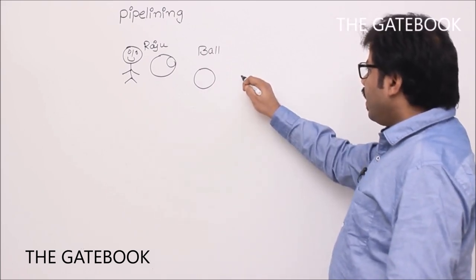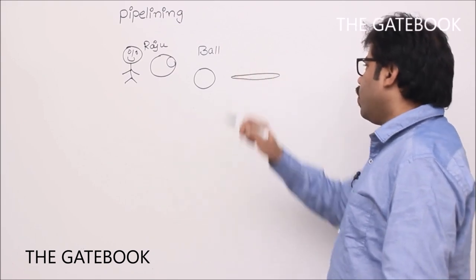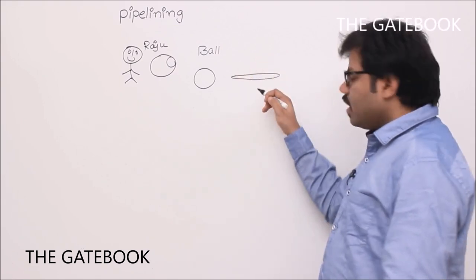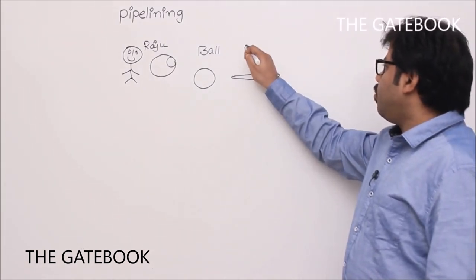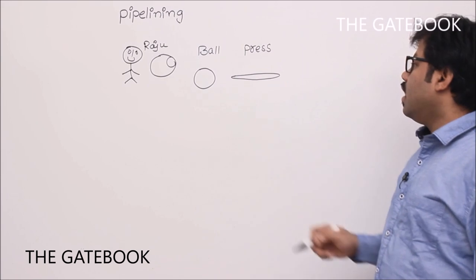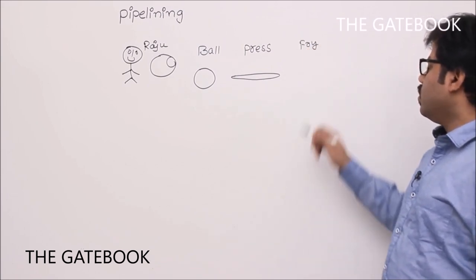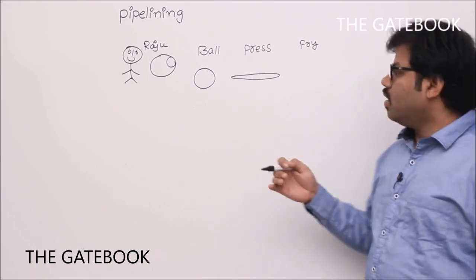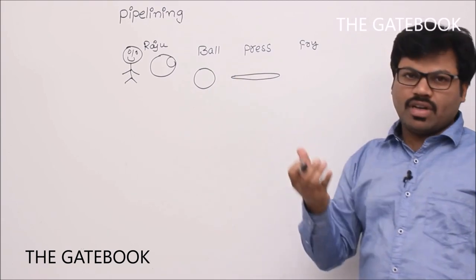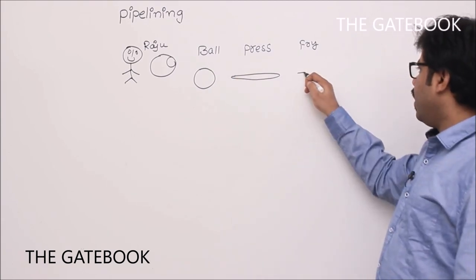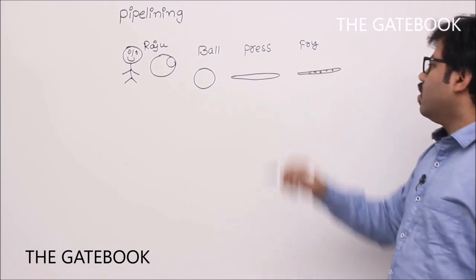Then he takes that ball and presses it. By pressing it he makes a round roti. After that it has to be fried — that is the third step. In the frying step he requires a stove, but he doesn't require a stove in the press stage or the ball-making stage. Finally he produces the fried roti. So that is the process: three stages — make ball, press, and fry.